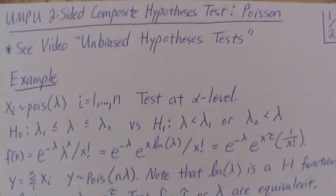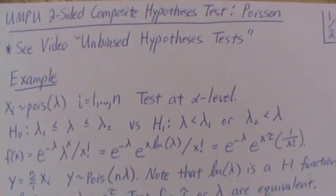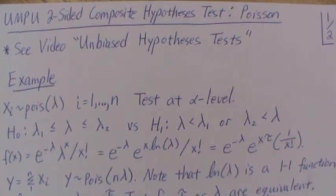Hello, this is the next video in a playlist that I'm calling hypothesis testing, and we're in the unbiased hypothesis testing phase. In the previous videos we looked at uniformly most powerful unbiased two-sided simple versus composite hypotheses, and in this little mini-series we're looking at composite versus composite uniformly most powerful unbiased two-sided tests, and we're in the Poisson setting in this video.